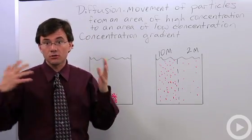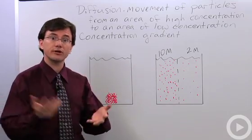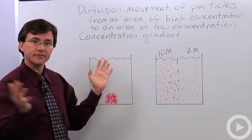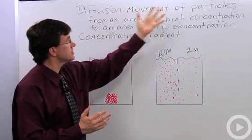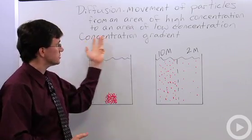So diffusion is defined as the movement of particles from an area of high concentration to an area of low concentration. Now if you notice, that's a really long phrase and so scientists have figured out a way to describe this area of high concentration and low concentration in just two words and that's concentration gradient.